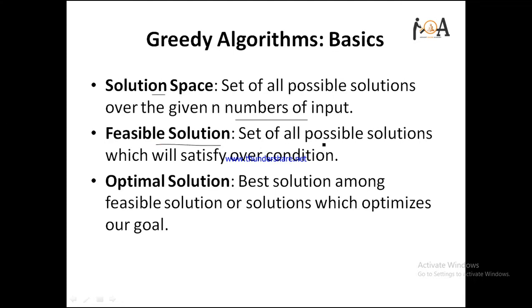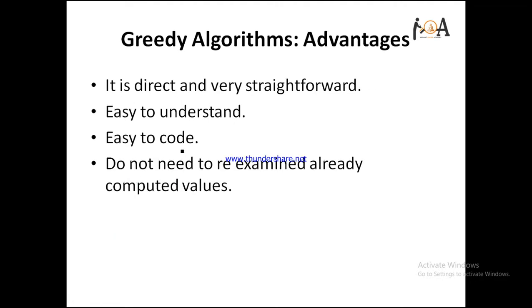A Feasible Solution is the set of all possible solutions which satisfy our condition. An Optimal Solution is the best solution among the feasible solutions — the one that optimizes our goal.